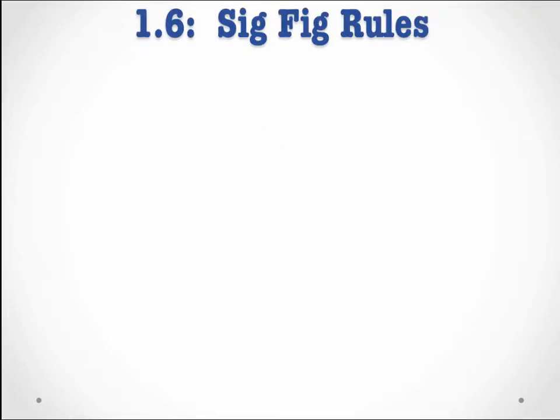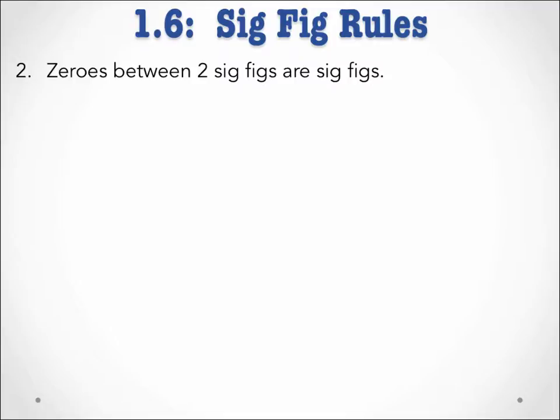It's when we run into measurements with zeros in them that things start to get a little hairy. The first rule tells us that zeros between two sig figs are themselves sig figs. For example, take the measurement 103,200.4 milliliters. Since all of the zeros in this value are between two non-zero numbers — between two sig figs — all of the zeros here are significant, giving this measurement 7 sig figs.